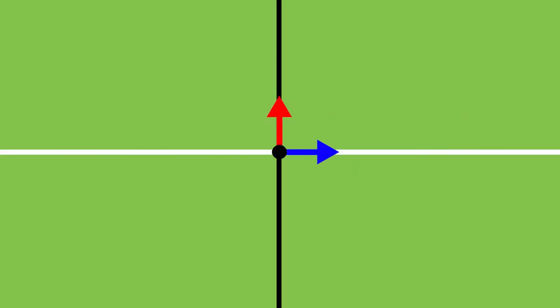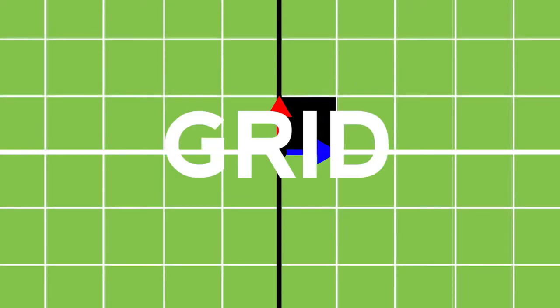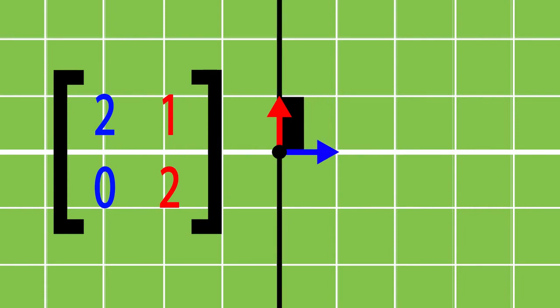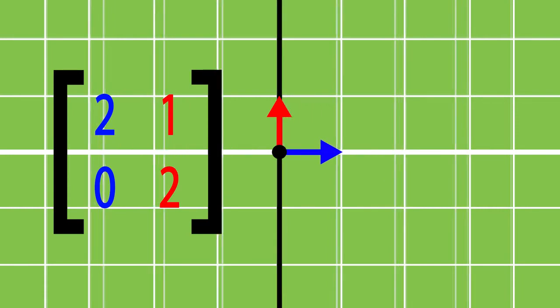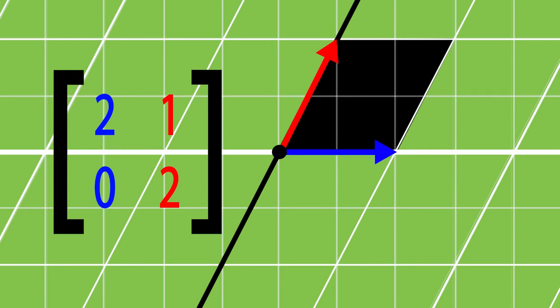But what even are matrices? In space, we have vectors. These vectors make boxes. If we put a bunch of boxes together, we make a grid. A matrix transforms these boxes by telling us what vectors to use. This matrix says use the vectors two zero, so we'll move my blue vector to the point two zero, and one two, so we'll move the other one to the point one two.